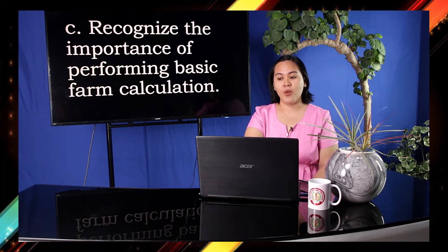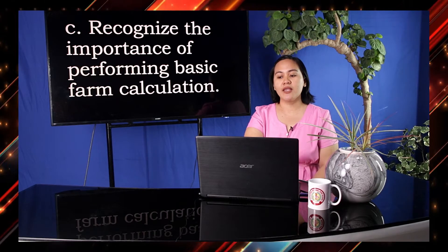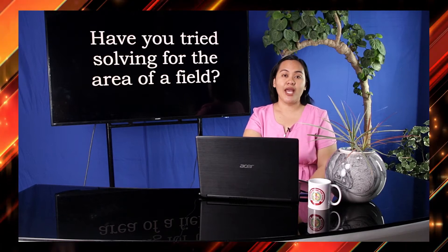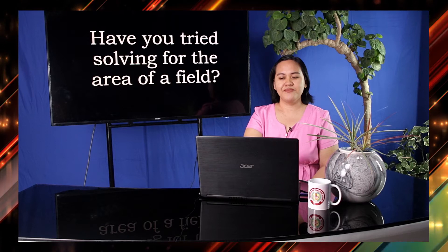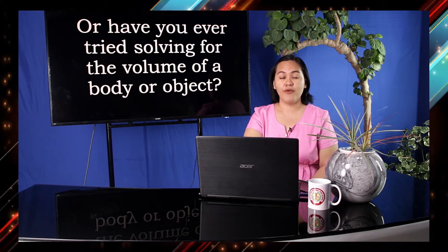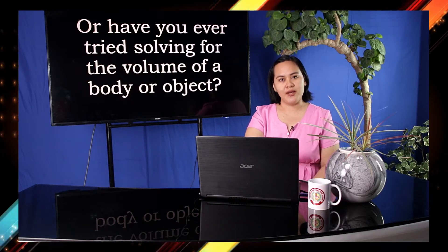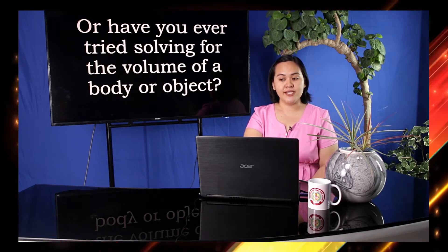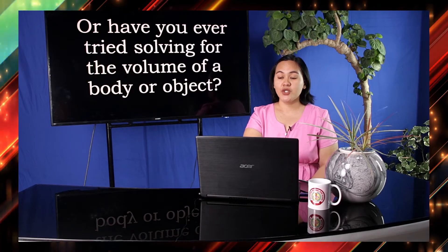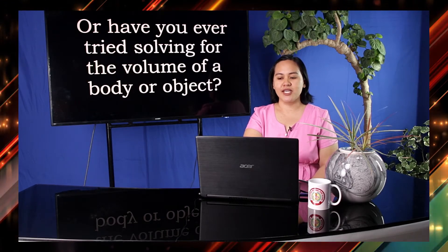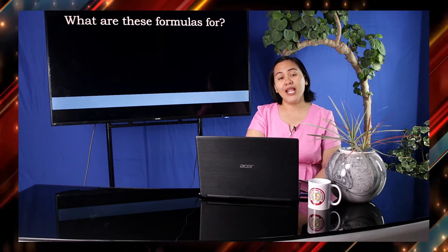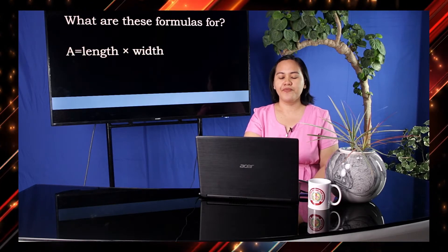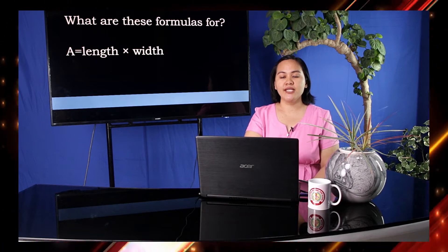Before we begin with our discussion, let's test your knowledge on today's topic. Have you ever tried calculating or solving for the area of a field? Or have you ever tried solving for the volume of a body or an object? Please prepare your pen and paper. You'll be given 5 seconds to answer each question. Correct answers will be revealed at the later portion of our discussion. Now, let's try to identify each of these formulas. For our first formula, A is equal to length times width.